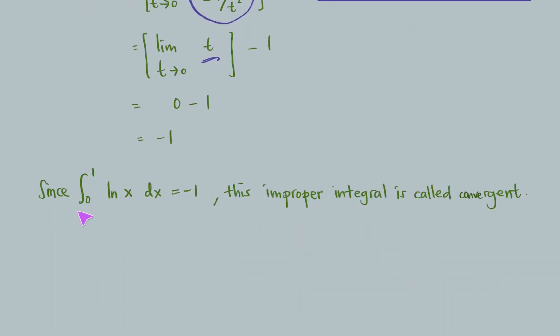Since the integral of ln x from 0 to 1 with respect to x is equal to negative 1, this means that this improper integral is called convergent because it converged to just one value. That's all for this video. Thank you. Assalamualaikum.